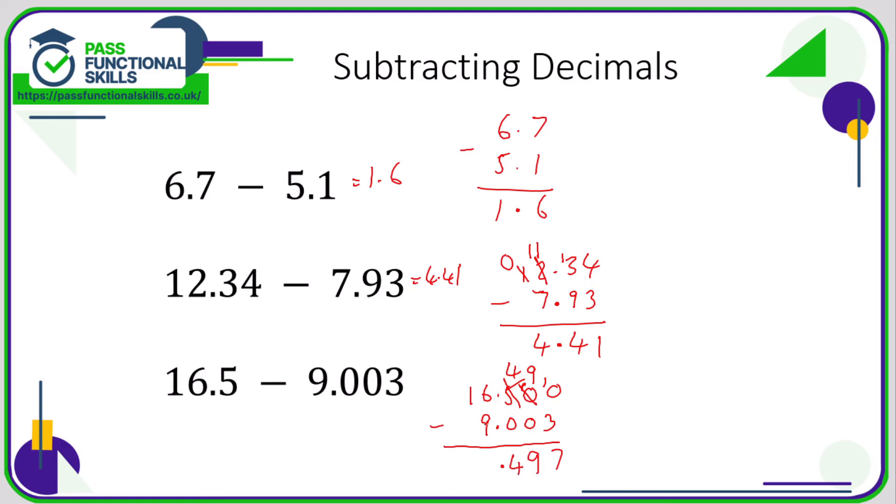6 minus 9 can't be done, 1 becomes a 0, 6 becomes 16, and 16 take away 9 is 7. So the answer is 7.497. Again, nothing can really go wrong provided you've got all the decimal points in line - that's really the most important thing.